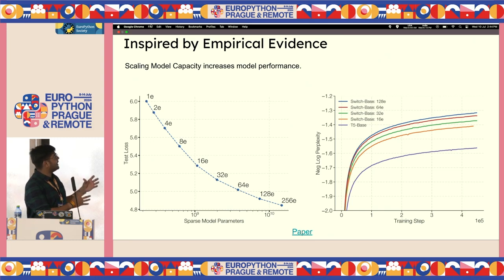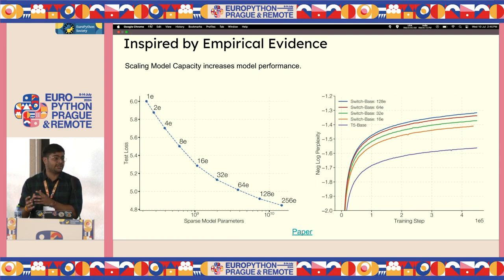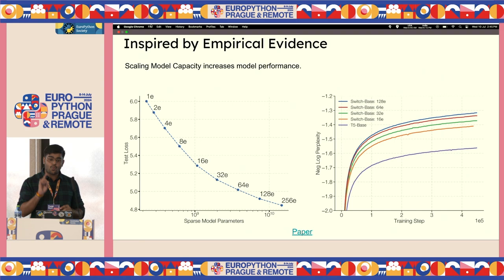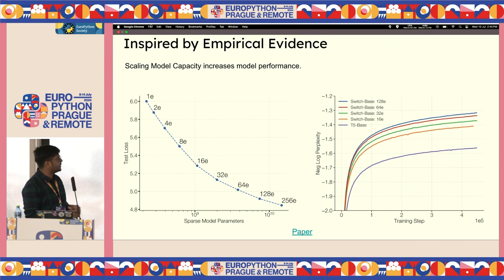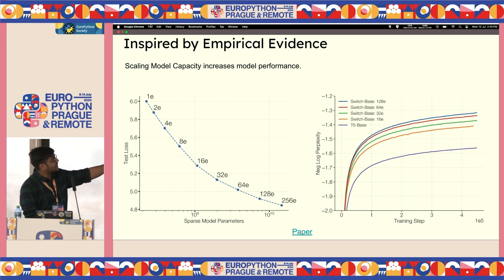There is empirical evidence that scaling model capacity increases performance, which is why companies are scaling to bigger dimensions. In a sparse model — where you have experts but choose more than one at a time — if you choose a single expert, it's called a switch transformer. Choosing two or three is a sparse model, compared to a dense model like GPT-3 where all neurons are processed in sequence. As you increase sparse model parameters, the test loss keeps decreasing following a power-law scaling curve. A bigger model also reaches a given loss level sooner than a smaller model.